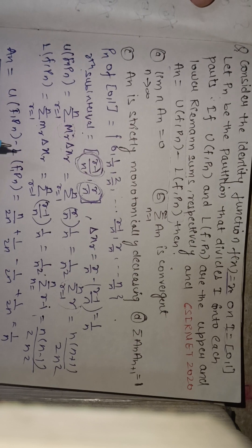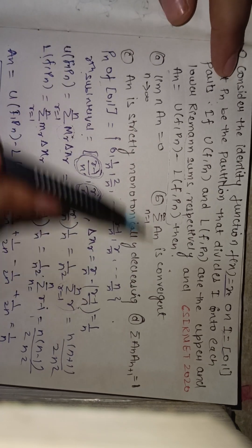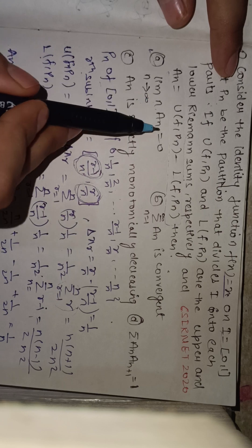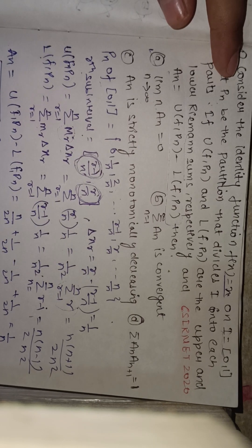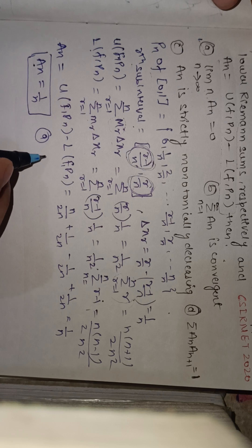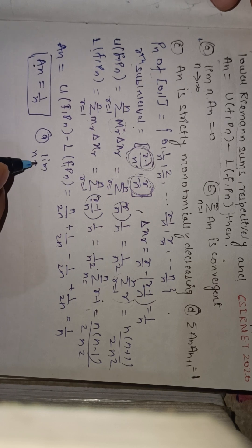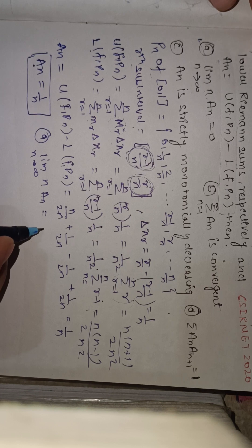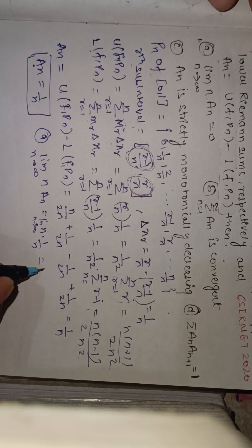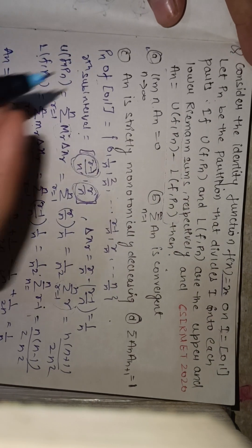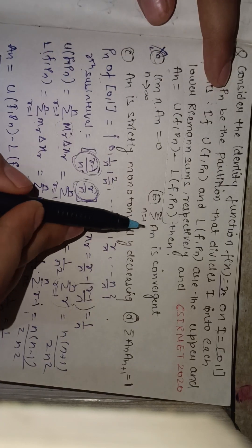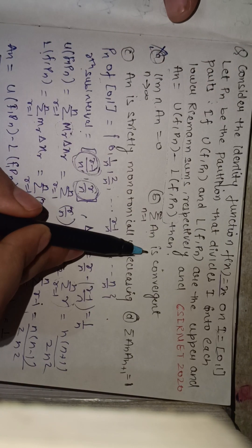We now use An = 1/n to check each option. For option A: limit as n → ∞ of n·An = limit as n → ∞ of n·(1/n) = 1, which is not equal to 0. So option A is wrong.